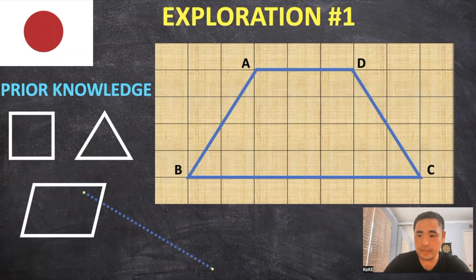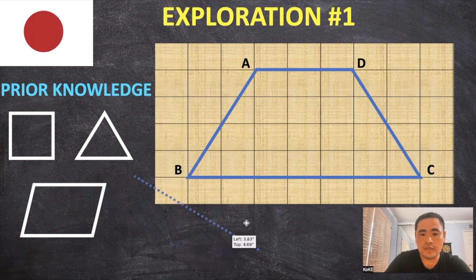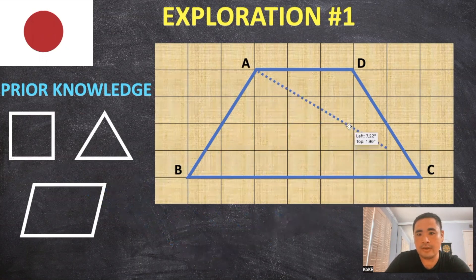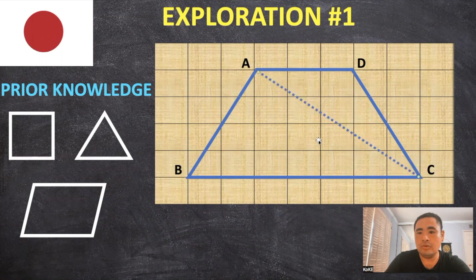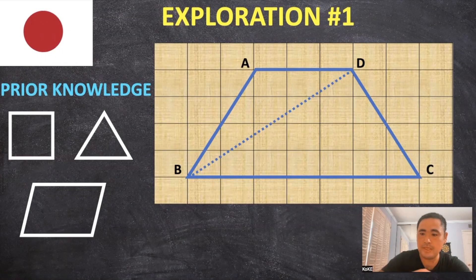In Japan, students will also start by decomposing and exploring the shape. But instead of the teacher showing them to draw vertical lines, the students can explore and draw a diagonal line from A to C and create two triangles. You can also draw a line from B to D.